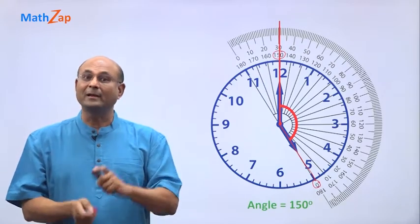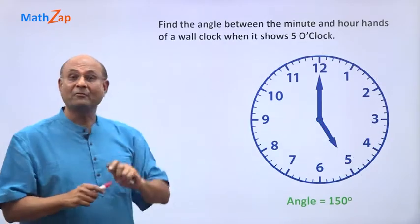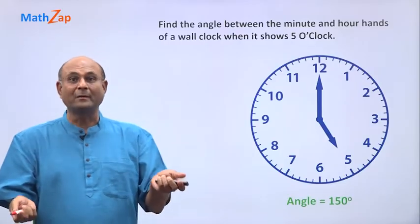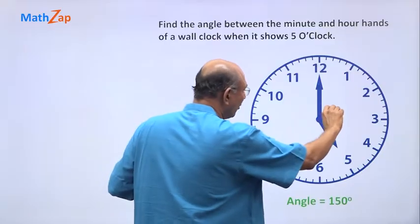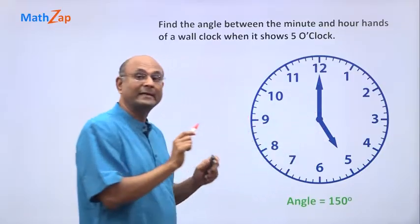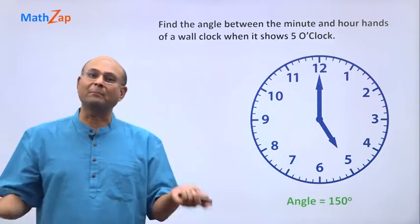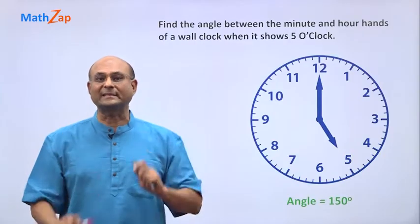This is one way of doing it. But there is a different way where we don't need a protractor, but we will do some calculations. Now you know that if I go all the way around, it is a complete angle. How much is a complete angle? 360 degrees.